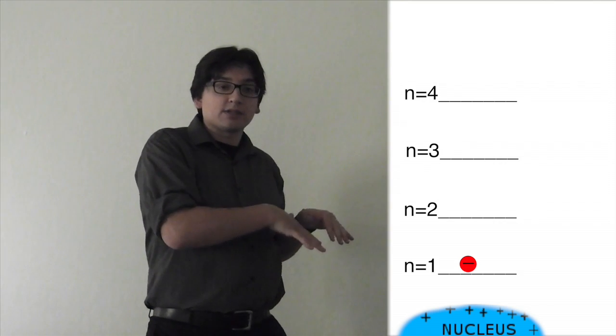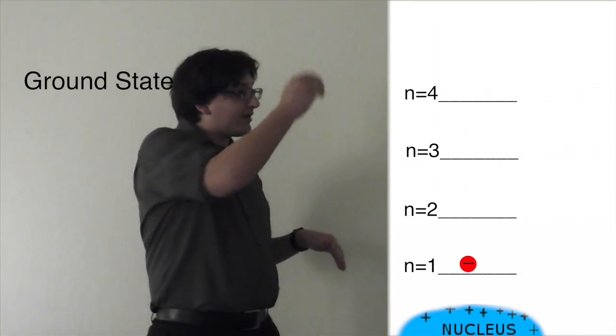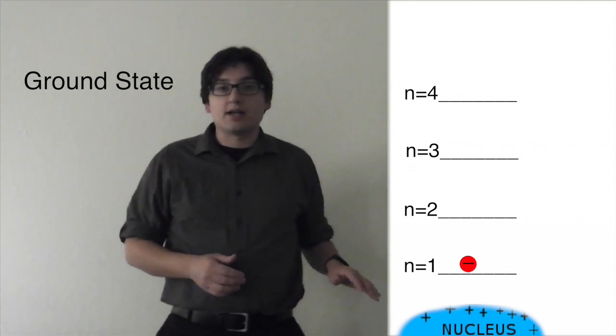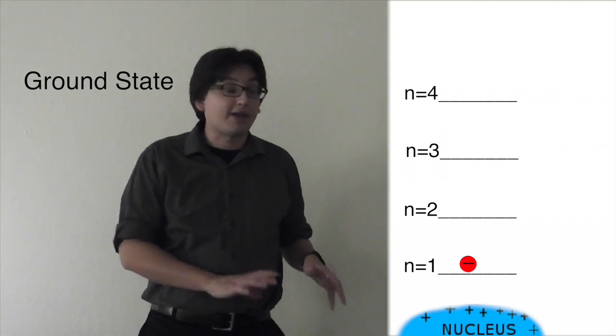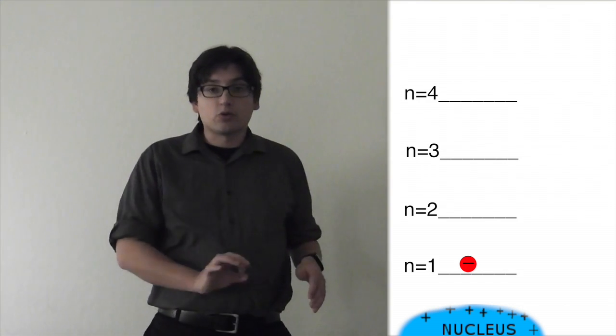But when it's in the lowest possible state, we call it the ground state. If I add more electrons to the ground state, the lowest energy level available for these electrons, they're going to start filling up those orbitals.